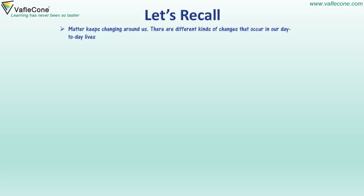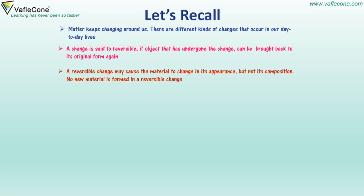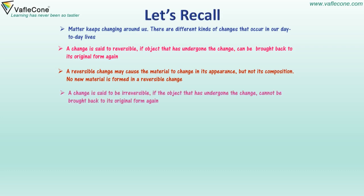Matter keeps changing around us. There are different kinds of changes that occur in our day-to-day lives. A change is said to be reversible if the object that has undergone the change can be brought back to its original form again. A reversible change may cause the material to change in its appearance but not its composition. No new material is formed in a reversible change. A change is said to be irreversible if the object that has undergone the change cannot be brought back to its original form again. A solution is formed when two or more substances mix together such that they are evenly distributed.